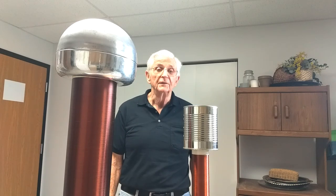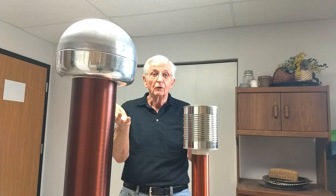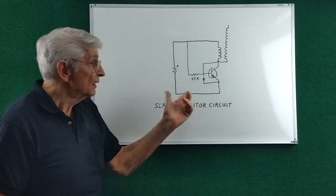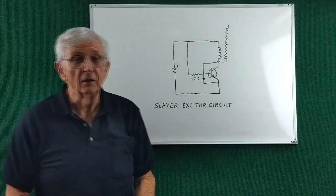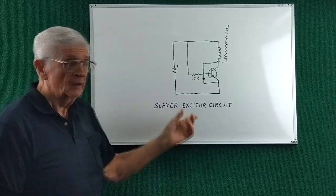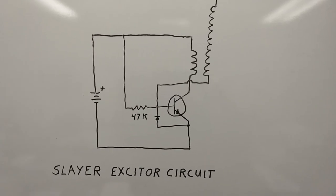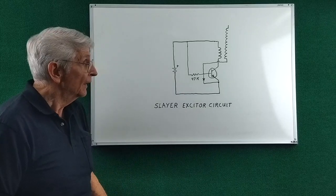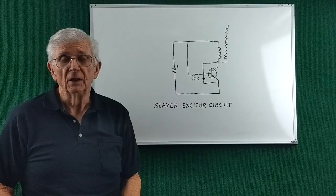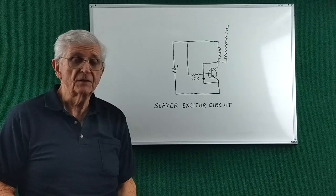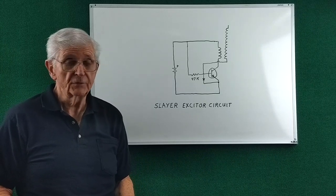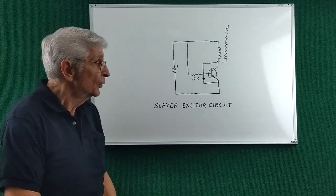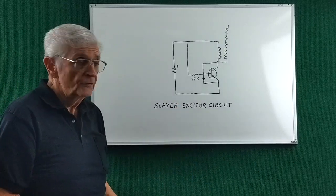This video is about Tesla coils. This is the basic circuit of what's called the Slayer Exciter. It's used for electronic type Tesla coils rather than the spark gap type.